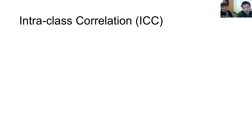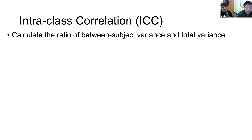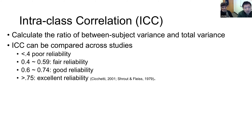To measure reliability, we frequently use what we call the intraclass correlation, ICC. ICC measures the ratio of the between-subject variance compared to the total variance. Common criteria: less than 0.4 is considered poor, 0.4 to 0.6 is fair, 0.6 to 0.75 is good, and above that is considered excellent.